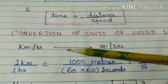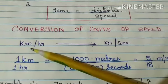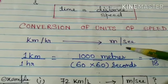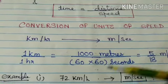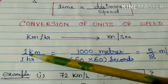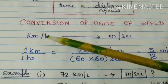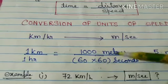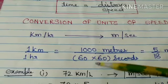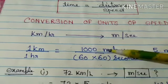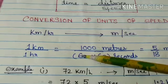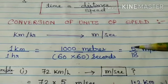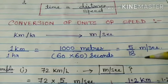We will now look at some conversions of units of speed. When the unit is given in kilometers per hour and we need to change it to meters per second, we expand it as 1 kilometer divided by 1 hour. Since 1 kilometer equals 1000 meters and 1 hour equals 60 into 60 seconds, after simplifying we get 1 kilometer per hour equals 5/18 meters per second.